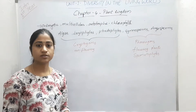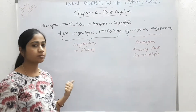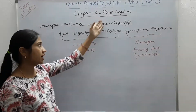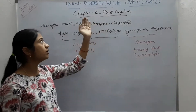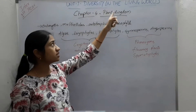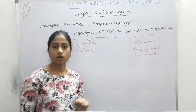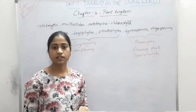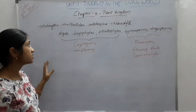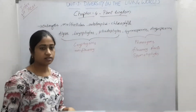Hello everybody. In this video we are going to discuss about the kingdom Plantae, that is the plant kingdom, which is the fourth chapter of diversity in the living world, which is the first unit of intermediate first year botany. So now let us start with the plant kingdom characteristics.